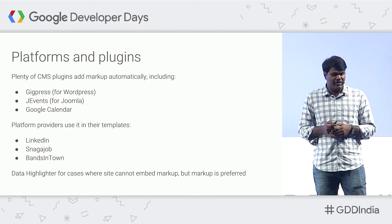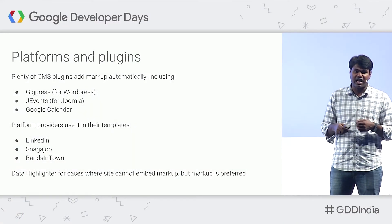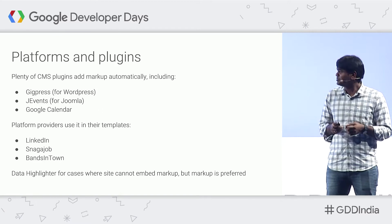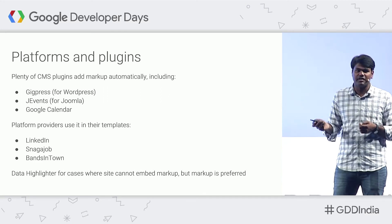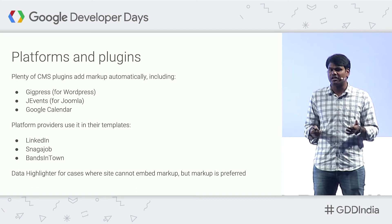One of the major ways we made structured data easier to implement is by having many middleware layers — CMS plugins and platforms — support structured data. That made it very easy for many content providers to add markup. In fact, many people who write content have rich snippets shown in search in a very visually appealing manner without ever touching a single line of code, purely because there are plugins for different CMSs and platforms like LinkedIn that embed markup automatically.